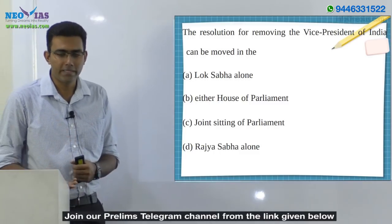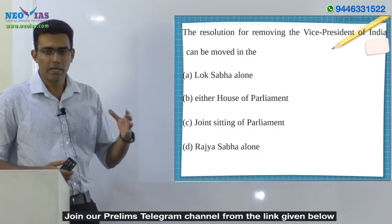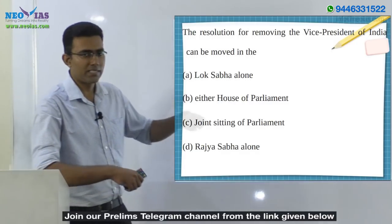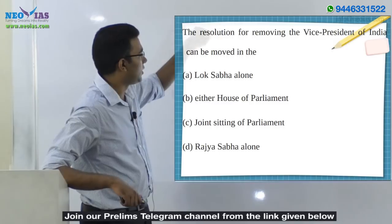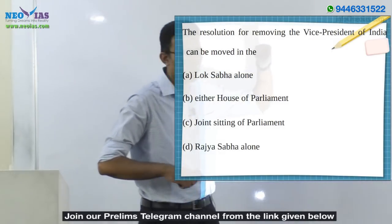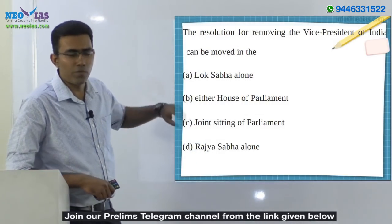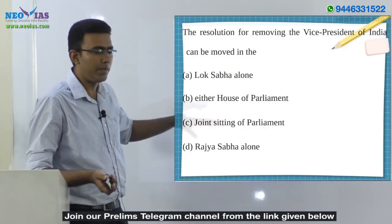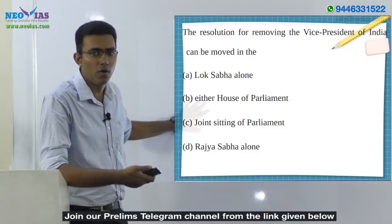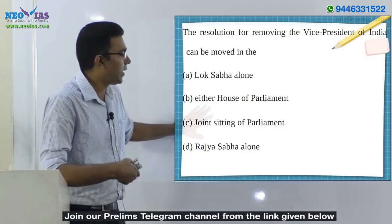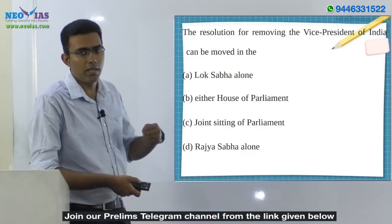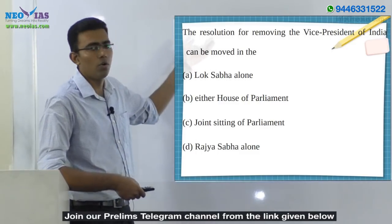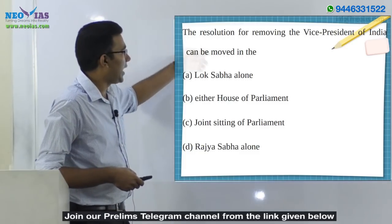If you are tense in your exam, this is a tricky question — it's simple but tricky. What you will likely do is see 'resolution removing Vice President' and without going through the entire question, you'll say both Houses of Parliament should be involved and go for option B, 'either House of Parliament.' So take a second and look at the question again carefully.